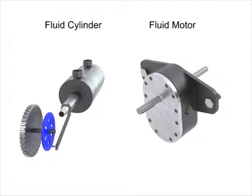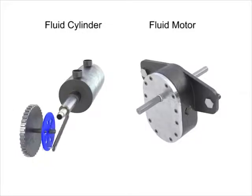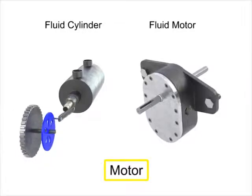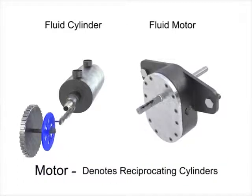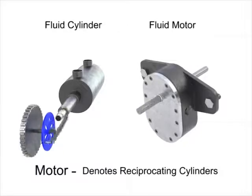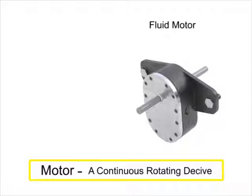The term fluid motor is normally used to identify those devices which deliver continuous rotary power output when supplied with fluid under pressure. The term motor is sometimes used by manufacturers to denote reciprocating cylinders. Technically, this is a correct usage but can lead to a misunderstanding of the type of actuator to be used. For the remainder of this video, we'll use the term motor to describe a continuous rotating device.